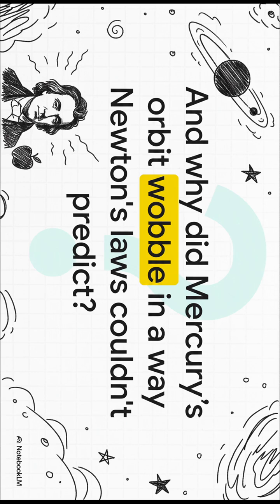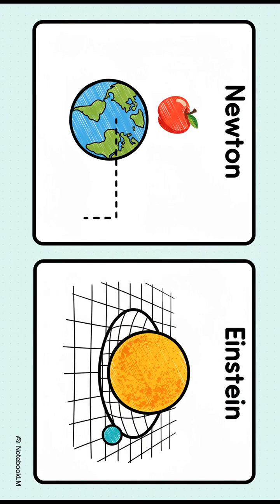And then there was Mercury. Its orbit had this weird wobble that Newton's laws just could not explain. Then, along comes Albert Einstein, who says,